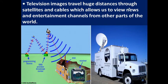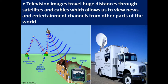Television images travel huge distances through satellite and cables — cables meaning wires — which allows us to view news and entertainment channels from other parts of the world. Nowadays we can watch live football, basketball, and cricket matches played in Europe, America, or the Middle East because of technologies such as satellites, DTH systems, and OB vans. These are the different technologies used in media to disseminate information around the world.